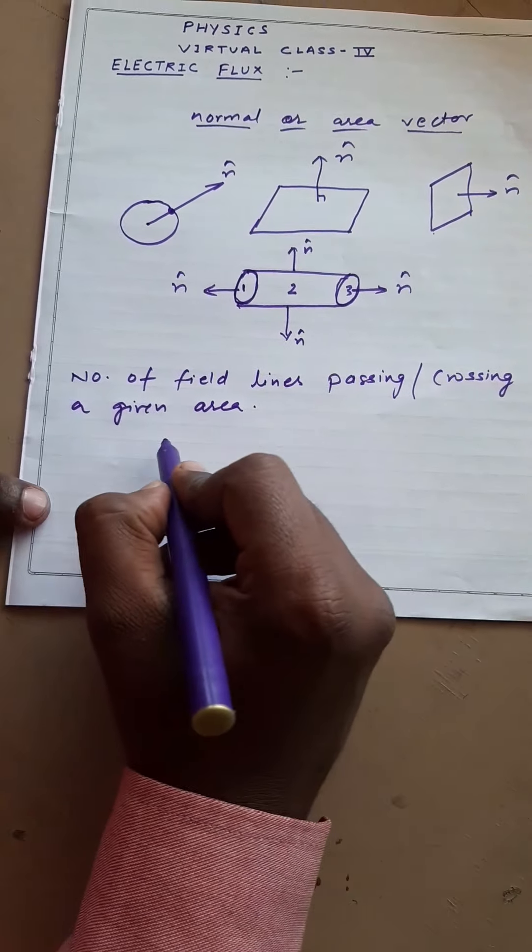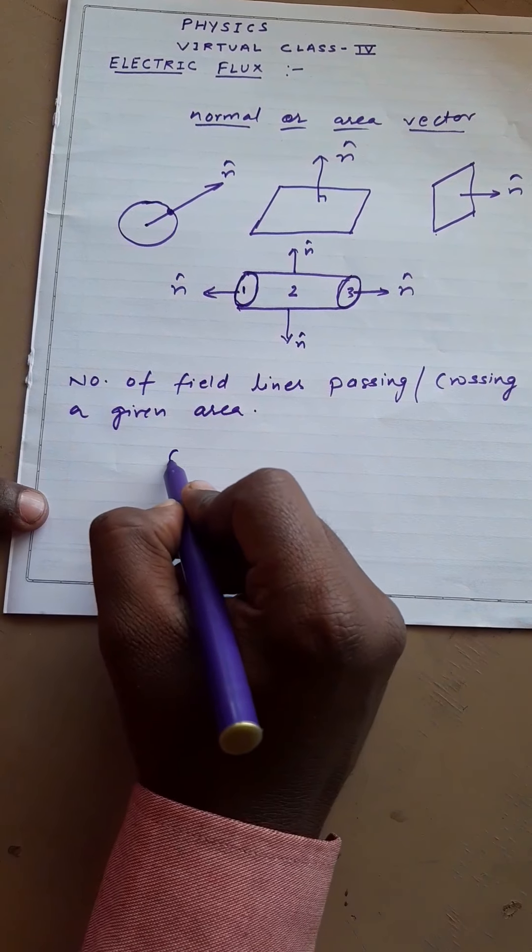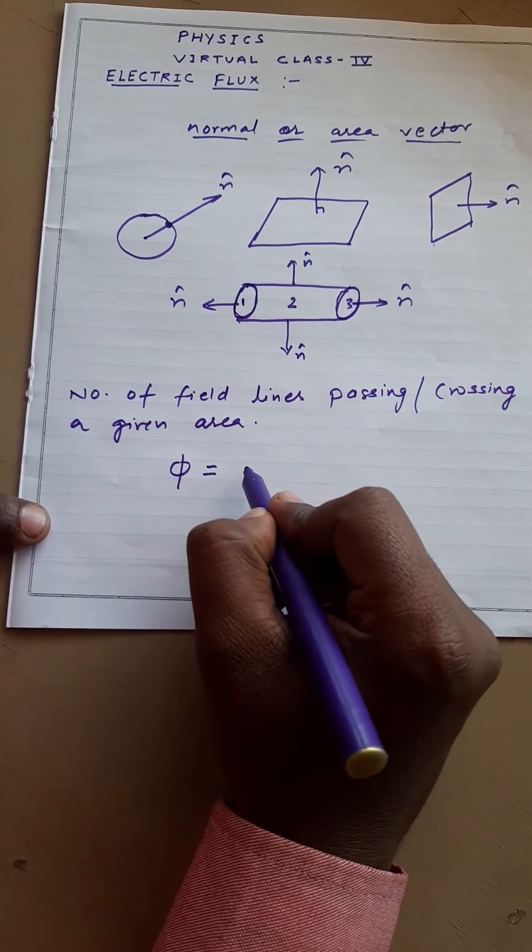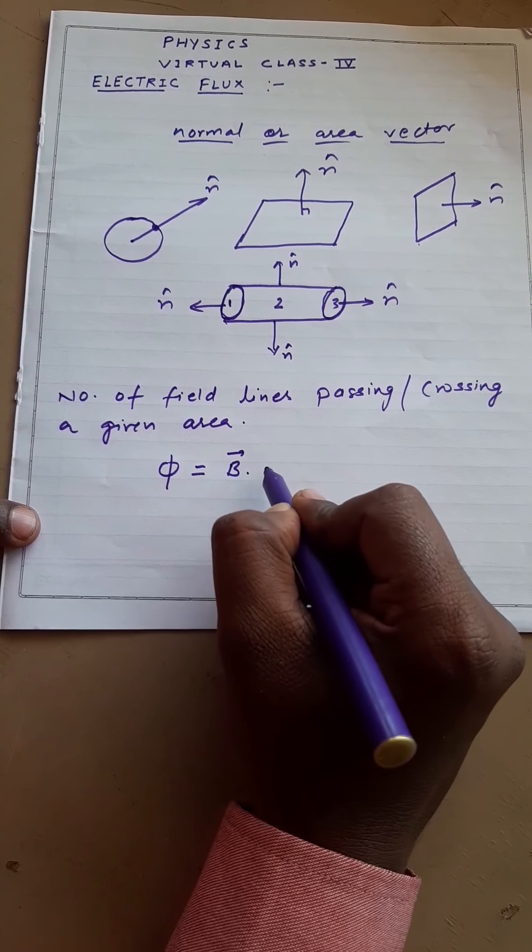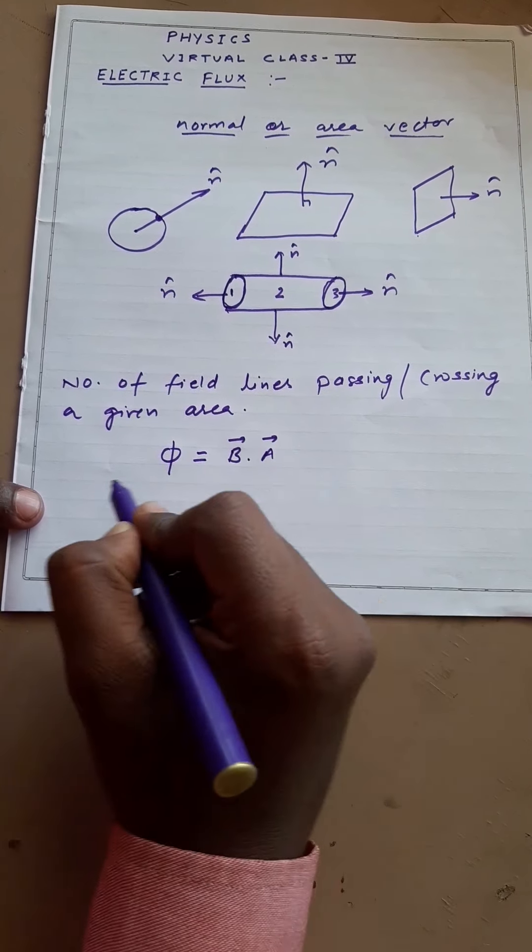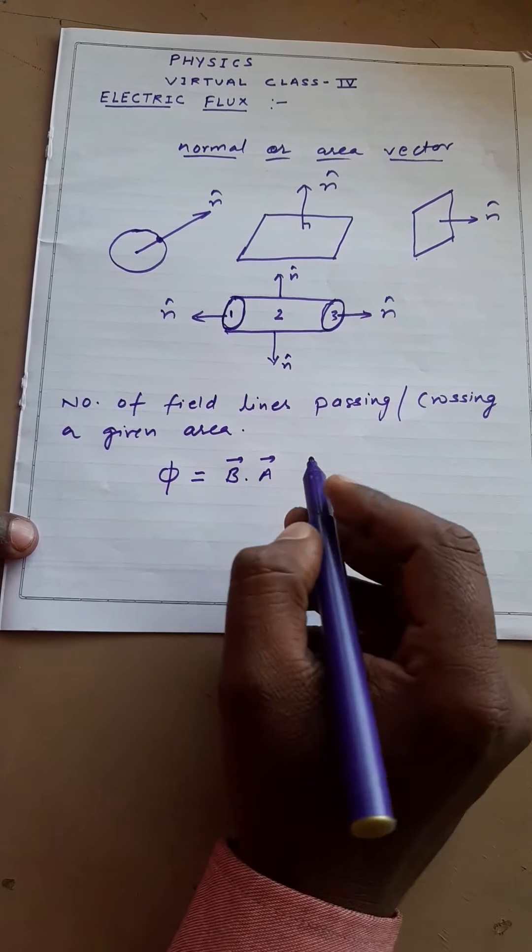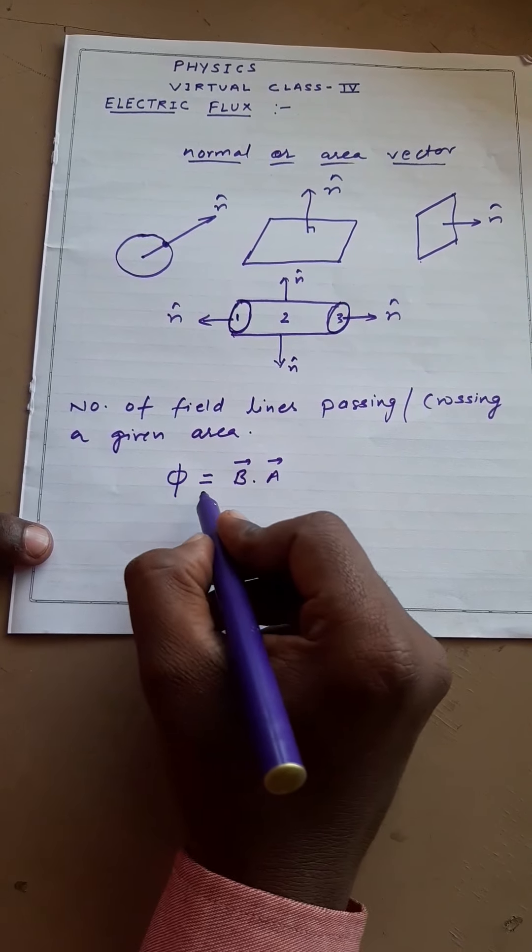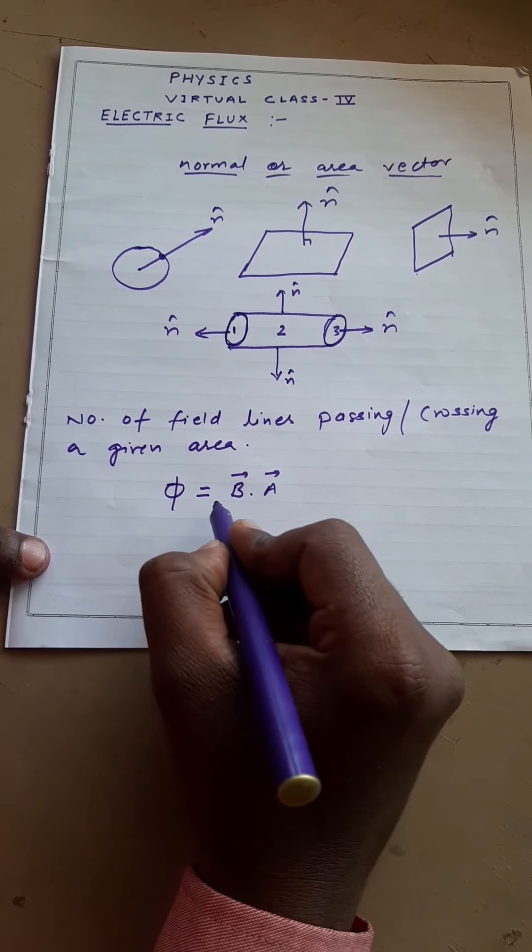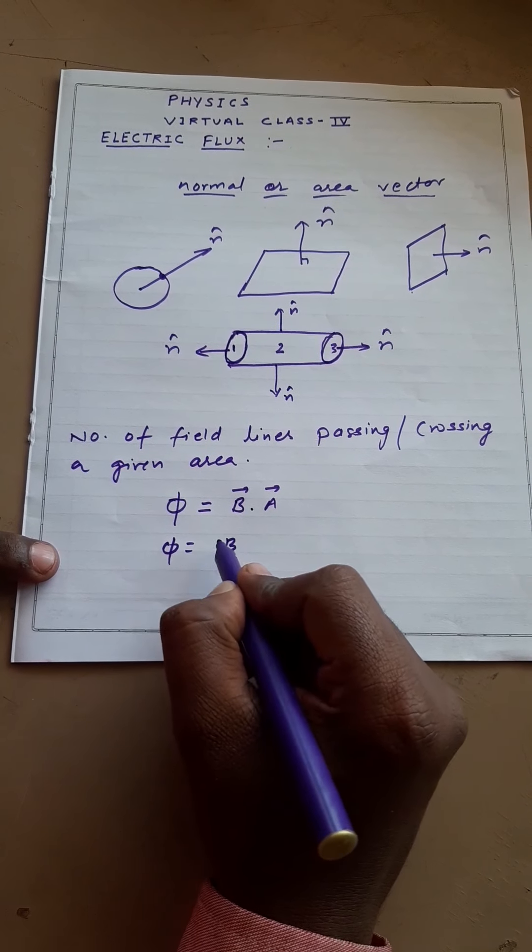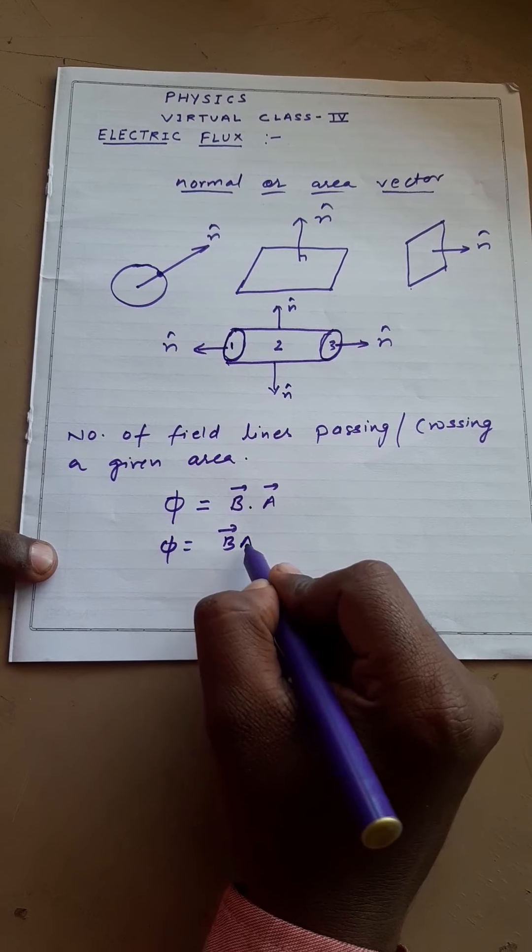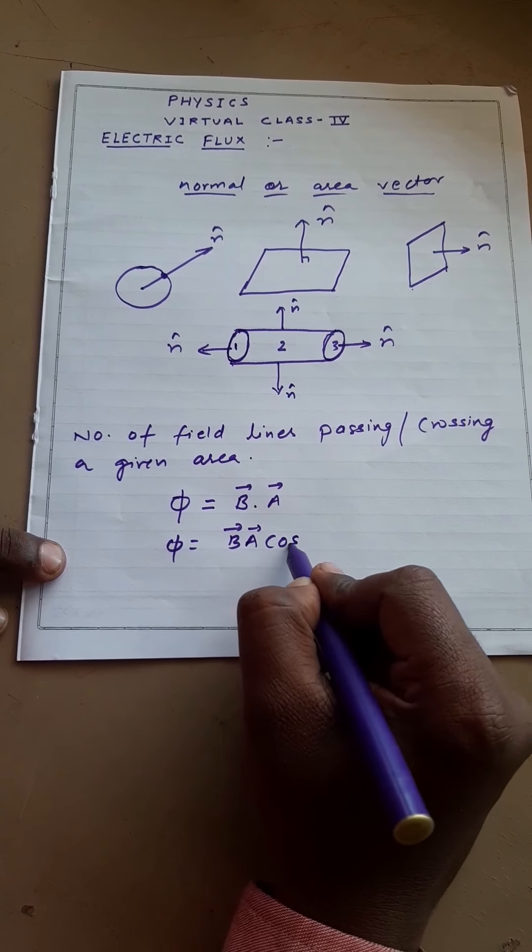So the flux is nothing but φ is equal to E dot A. This A and E are both vector quantities and the resultant of these is a scalar which is φ is equal to EA cos θ.